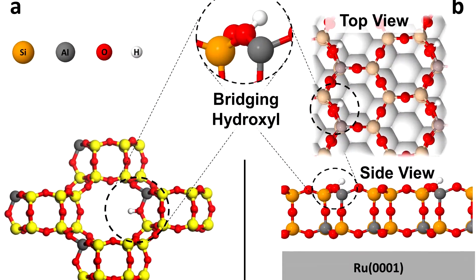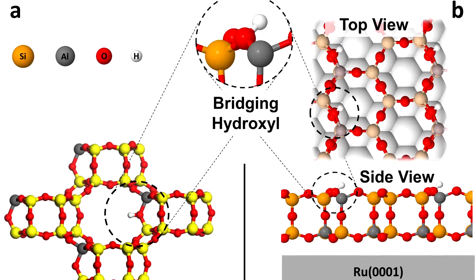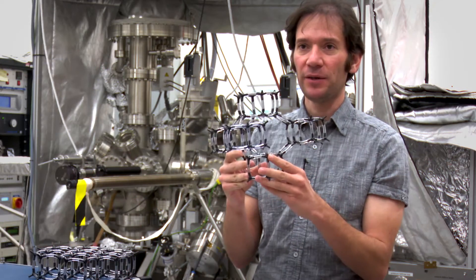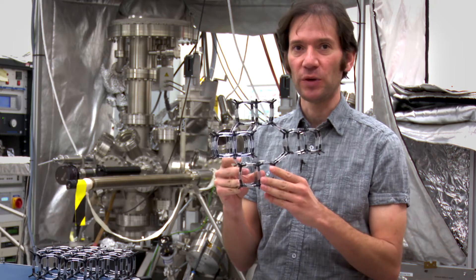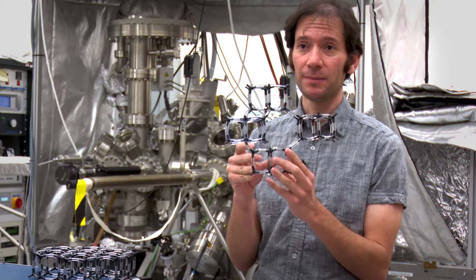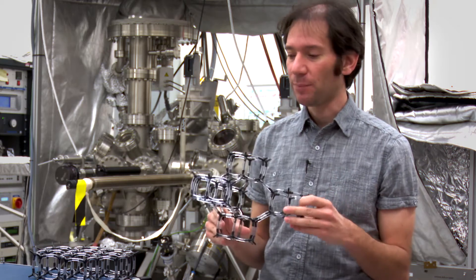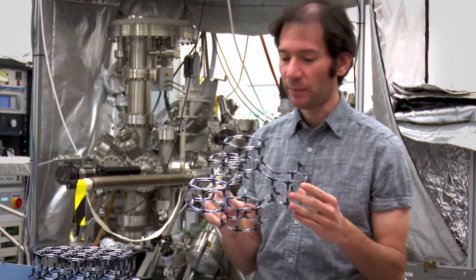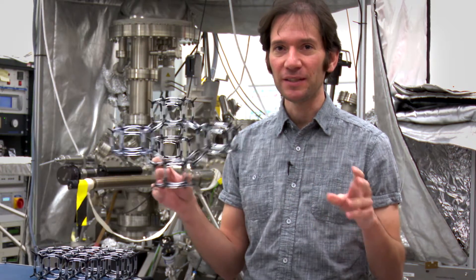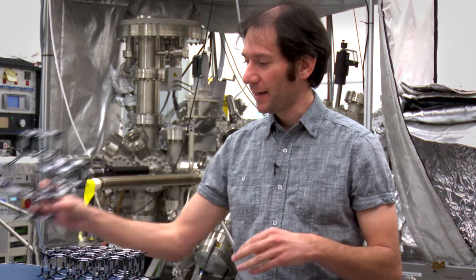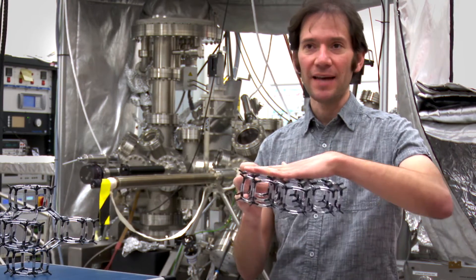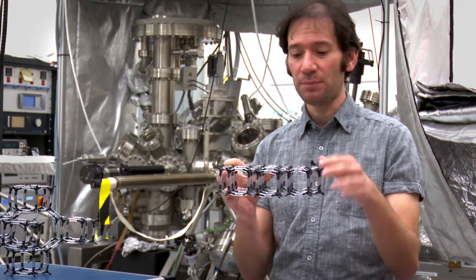So we cannot access it with our instruments, which typically for other materials allow us to get information down to the atomic scale. So we cannot do that for real zeolites. The approach that we have taken is to synthesize another material — a dummy zeolite that has the same chemical behavior as the real one, but has the active site exposed on a surface.